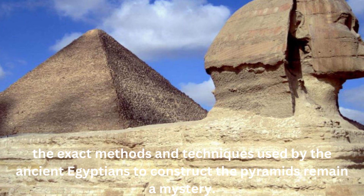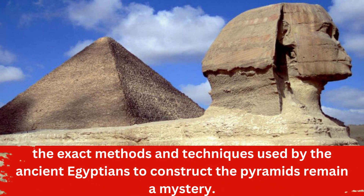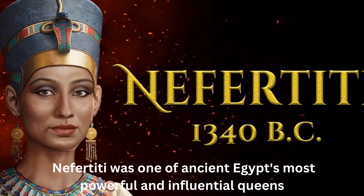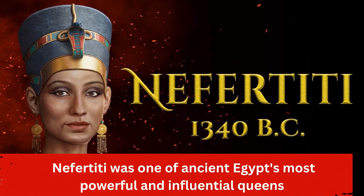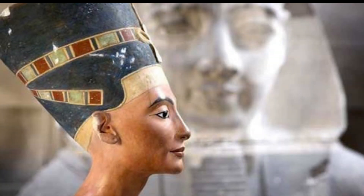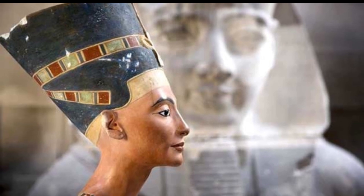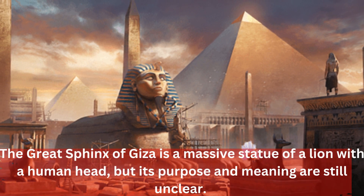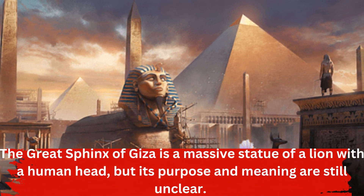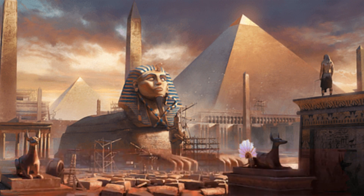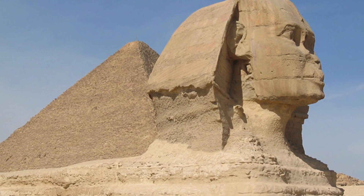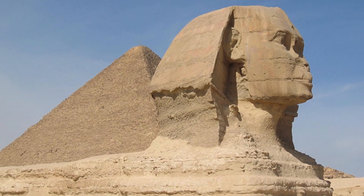Despite centuries of study and research, the exact methods and techniques used by the ancient Egyptians to construct the pyramids remain a mystery — many theories have been proposed, but none have been definitively proven. Nefertiti was one of ancient Egypt's most powerful and influential queens, but she vanished from the historical record after her husband's reign ended; some scholars believe she was banished or murdered, while others think she may have ruled as pharaoh under a different name. The Great Sphinx of Giza is a massive statue of a lion with a human head, but its purpose and meaning are still unclear, with theories ranging from a symbol of royal power to a spiritual or religious significance.